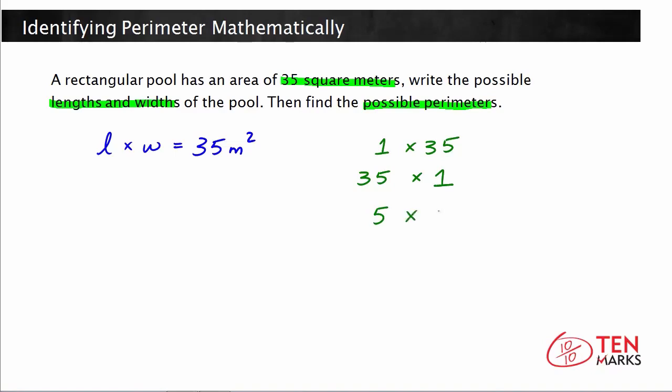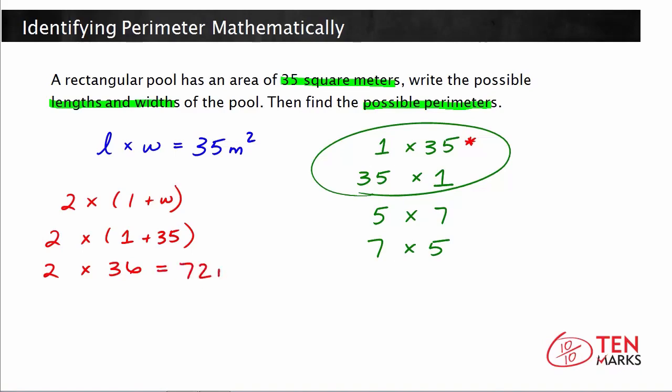Also, you could have a length of 5 and a width of 7, and you can reverse this as well to have a length of 7 and a width of 5. So now let's take a look at this first factor pair and determine what the possible perimeters could be. The perimeter is 2 times the length plus the width. So you'd have 2 times 1 plus 35. 1 plus 35 is 36. So 2 times 36 is 72 meters.